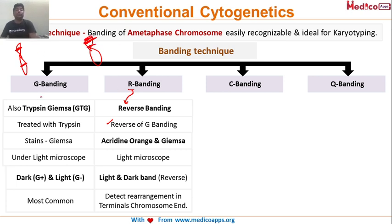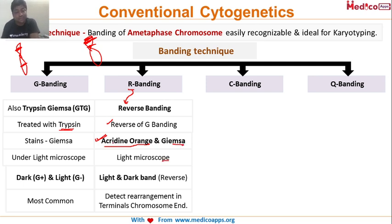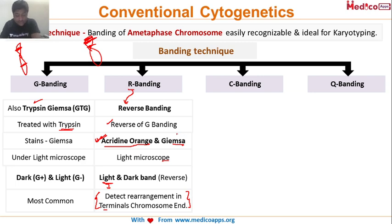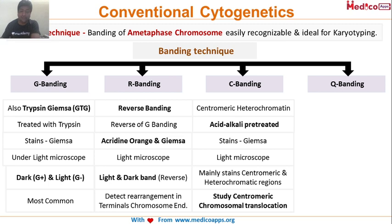In R banding, whatever was dark in G banding becomes light, and whatever was light becomes dark — the pattern is exactly opposite to G banding. This difference occurs because instead of trypsin, the pre-treatment agent here is acridine orange. The dye and microscope are the same, but the different pre-treatment agent produces the reverse banding pattern. Light bands in R banding correspond to GC-rich segments. Its special use is to detect rearrangements in terminal chromosomes.